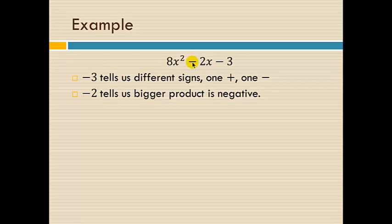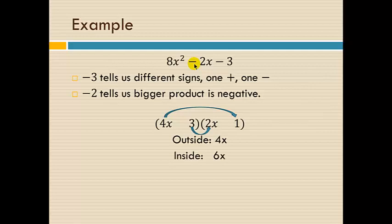So we need to figure out which one's which. We'll play with some numbers. We might try 4x, 3, 2x, 1, because 4x times 2x is 8x squared, 3 times 1 is 3. And we just need to make the bigger product negative to match the middle sign. Well, on the outside, 4x times 1 is 4x. On the inside, 3 times 2x is 6x. The bigger product is negative. 6x is negative. The smaller one must be positive. So the 6x is negative.